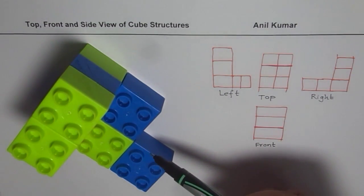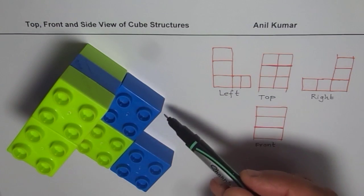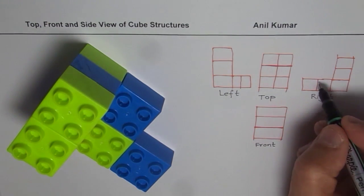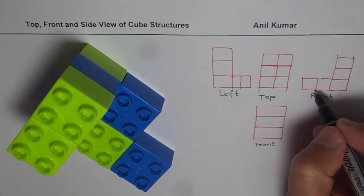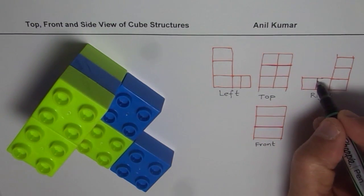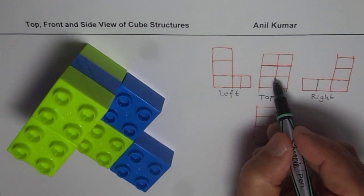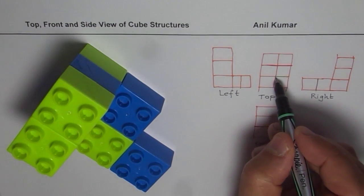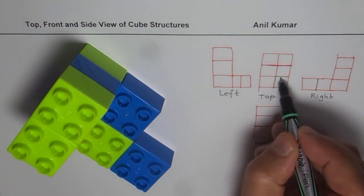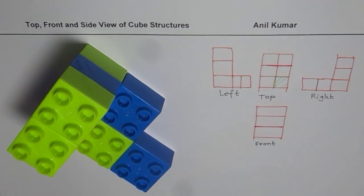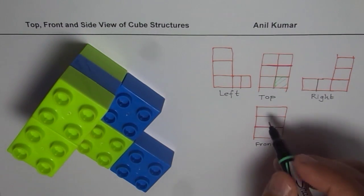When you look from the right after removing the block, you still see the same outline but now you also see a change in depth, so that line becomes bolder. From the top, the removed block has to be taken out — that is a big change.